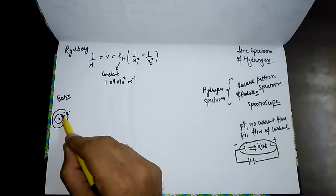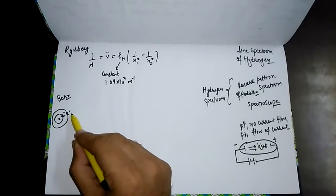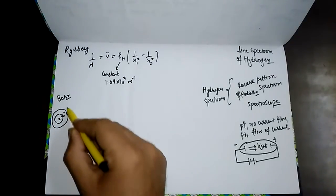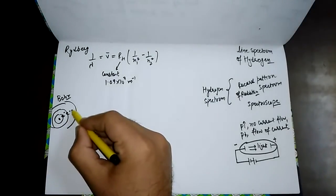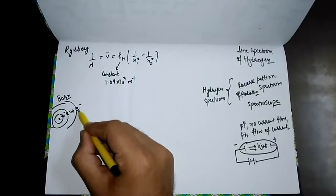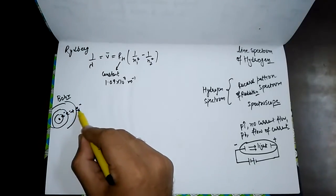If energy is given to the electron from an outside source, the electron will absorb the energy and jump to a higher level — reaching some upper level. We call this level the excited state.